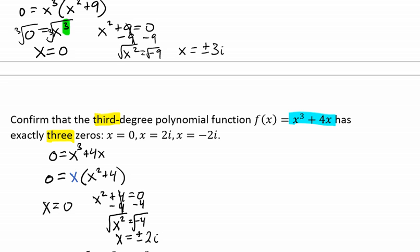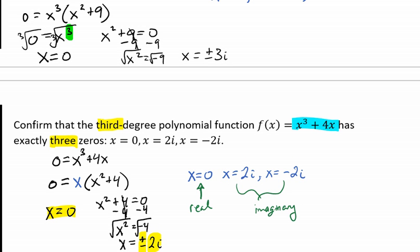We see that we have 1, 2, 3 solutions: x = 0, x = 2i, and x = -2i. Notice that here, our 0 is the only real solution. These two are imaginary solutions. We were able to confirm that this degree 3 polynomial has exactly three zeros, which are x = 0, x = 2i, and x = -2i.